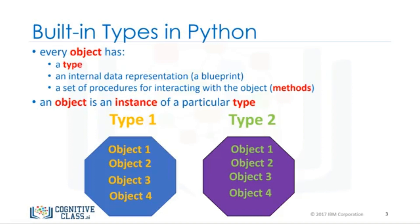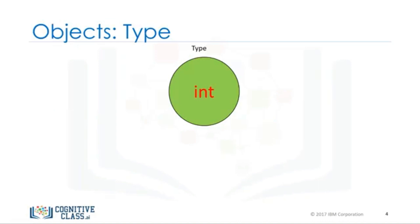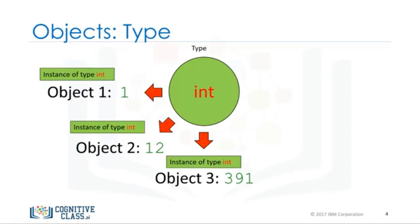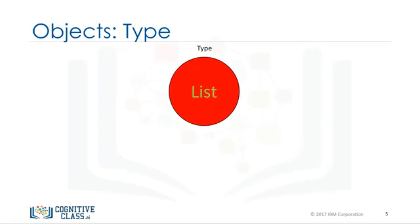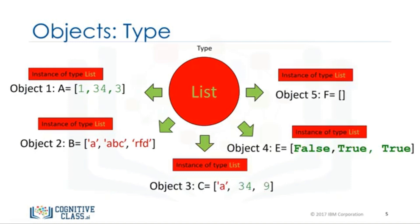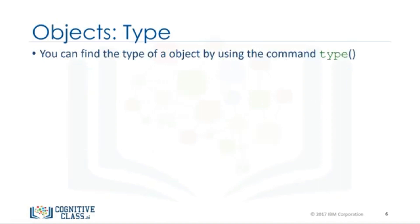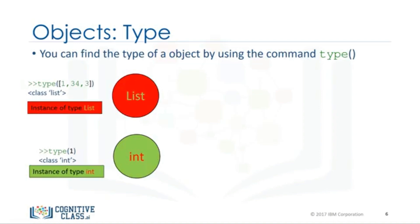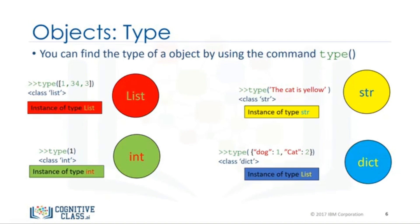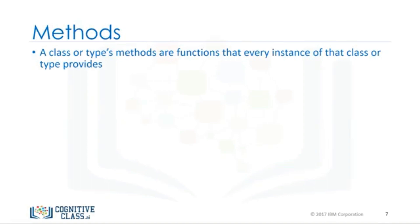We can find out the type of an object by using the type command. In this case, we have an object of type list, an object of type integer, an object of type string, and an object of type dictionary. A class or type's methods are functions that every instance of that class or type provides. It's how you interact with the object. We have been using methods all this time — for example, on lists. Sorting is an example of a method that interacts with the data in the object. Consider the list ratings. The data is a series of numbers contained within the list. The method sort will change the data within the object. We call the method by adding a period at the end of the object's name, and the method's name we would like to call with parentheses.